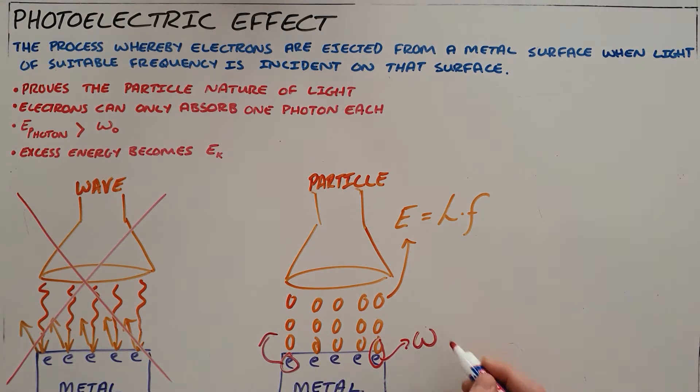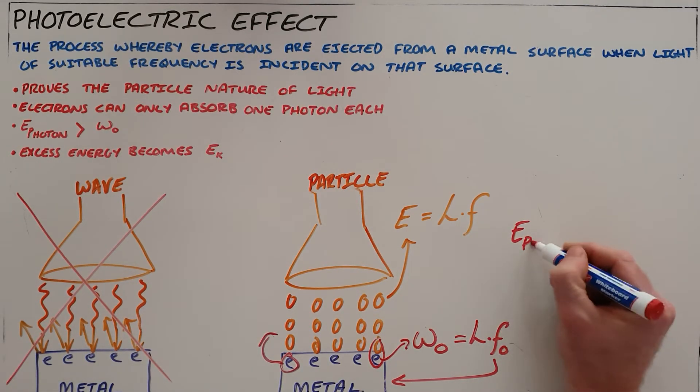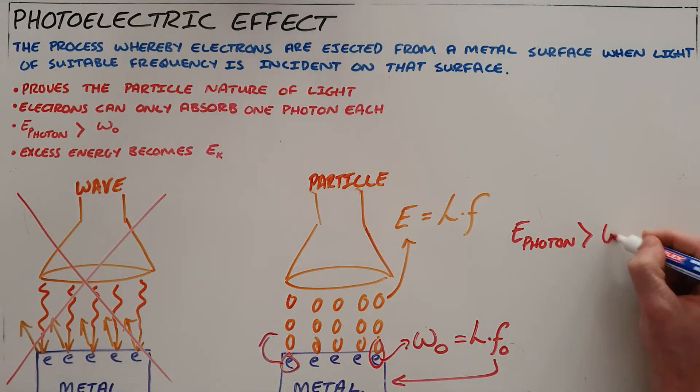That amount of energy is known as the work function. It is essentially the product of Planck's constant and the threshold frequency for that specific metal. So what that tells us is that in order for an electron to escape this metal surface, the energy of the photon would have to exceed or be greater than the work function for that metal.